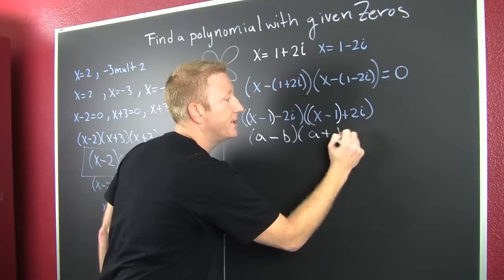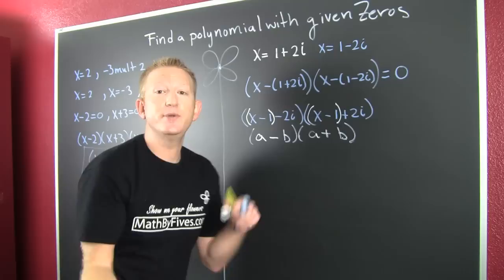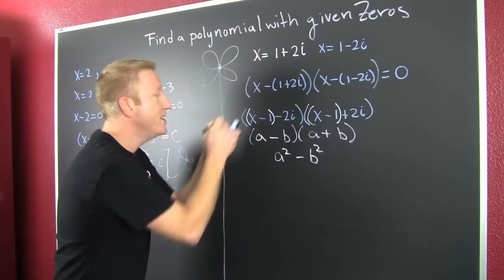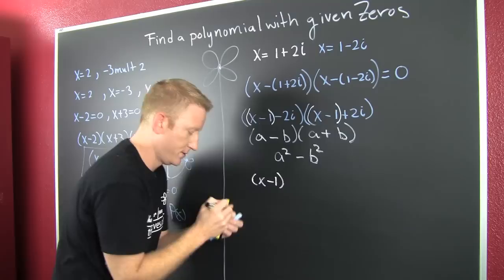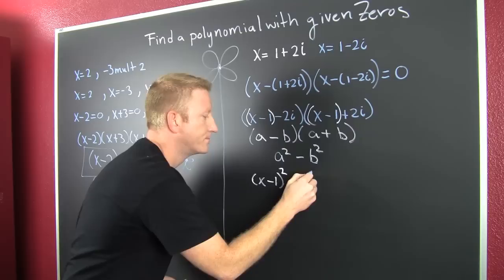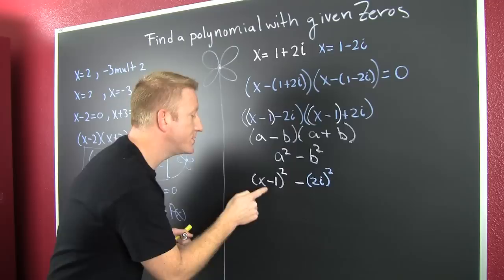A minus b. A plus b. This is your a, and that's your b. Now, we see that that's going to multiply out to a squared minus b squared. So, we'll go ahead and we'll do that. We'll say x minus one squared minus two i squared. Okay. Finish him.